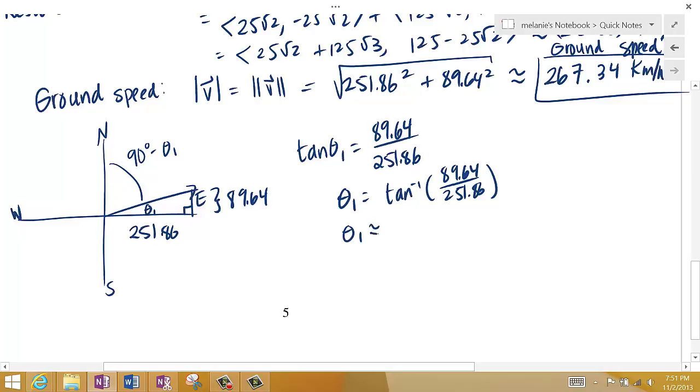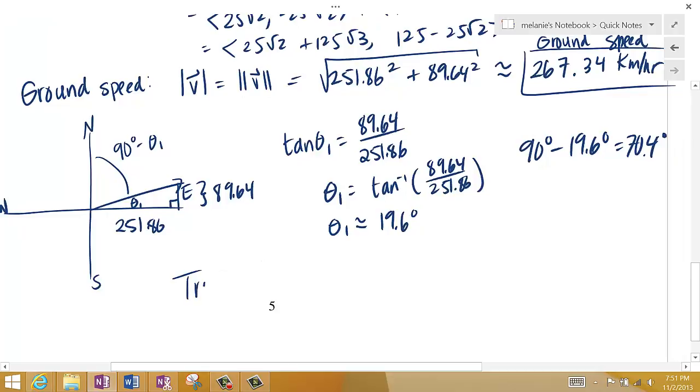Looks like theta 1 is approximately 19.6 degrees. Okay well that's just this angle here I want it bearing, so I'm going to do 90 degrees minus 19.6 degrees and I get 70.4 degrees. So the true course is north 70.4 degrees in the direction of east.